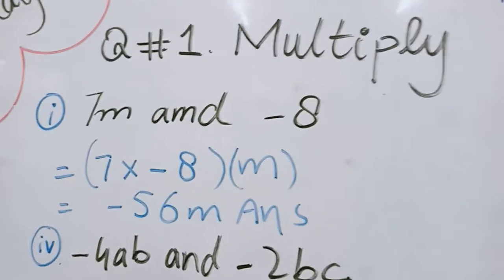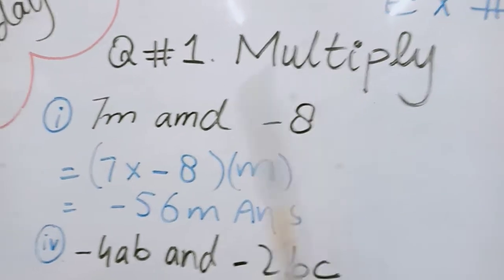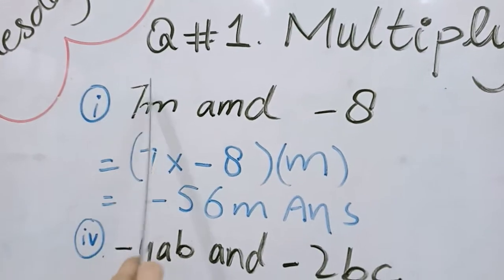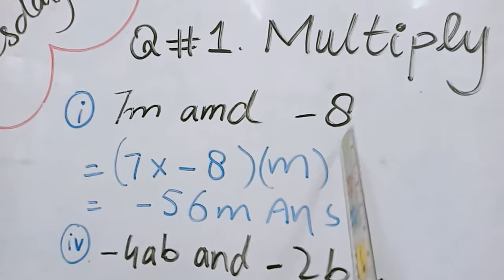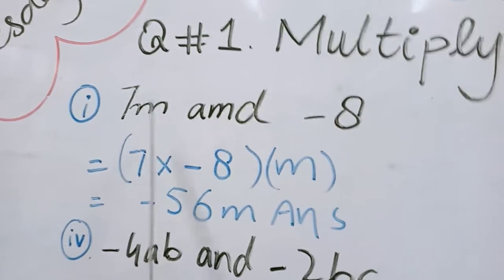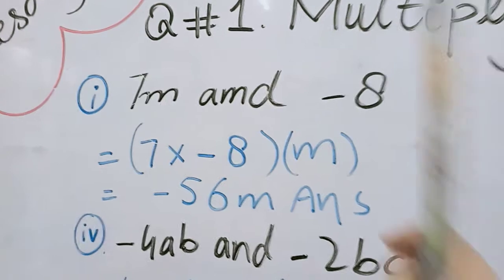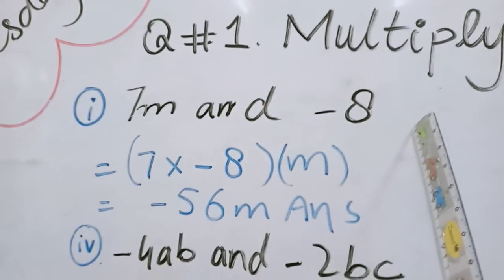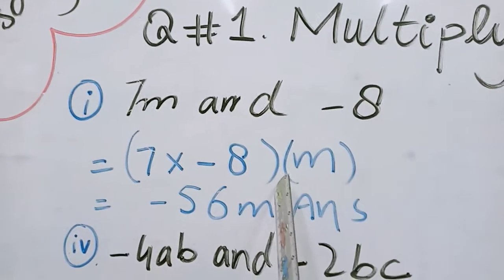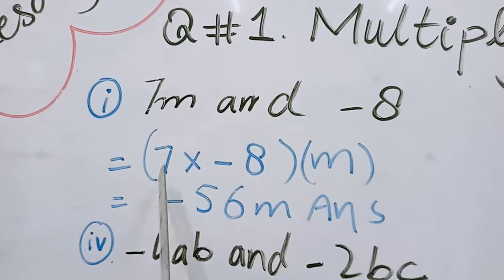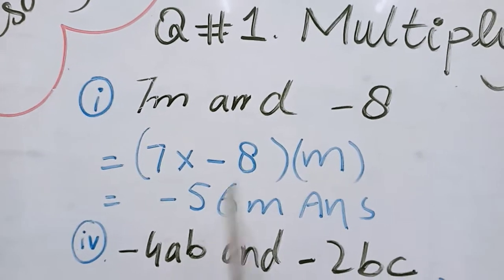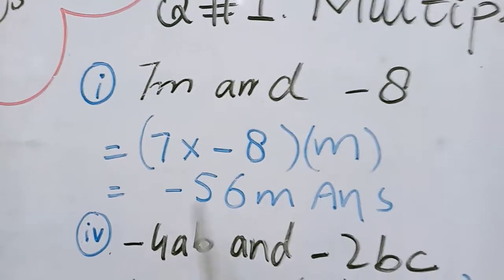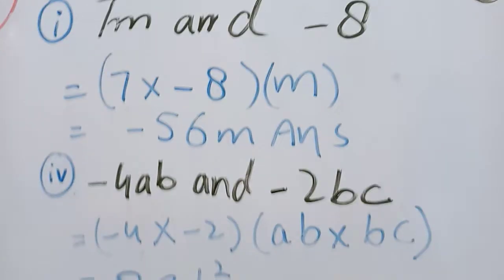So how we can multiply. For multiplication we multiply counting words. For example, 7 multiply minus 8. So plus minus, minus 7 is 56. In variable we have just m. We write here m. So as it we write here m. Minus 56m is answer. Come to next.